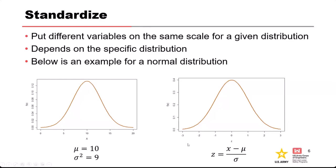Z is equal to X minus the mean, divided by the standard deviation. A standard normal has a mean of zero and a standard deviation of one. This normalization either simplifies calculations or makes comparisons easier.